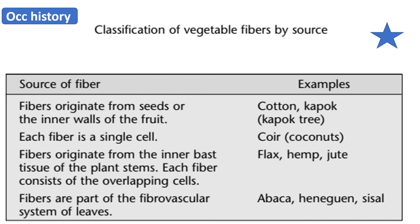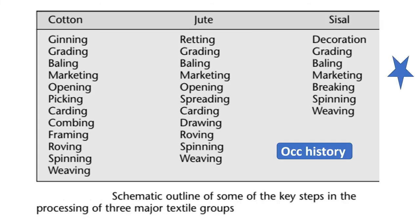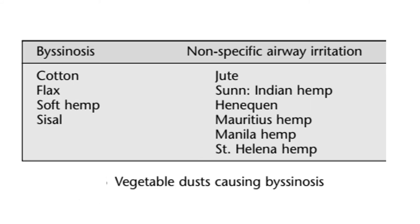Classification of vegetable fibers by source can be known for each worker by occupational history. Examples include exposure to cotton, coconuts, flax, hemp, jute, and sisal. There are three major textile groups — cotton, jute, and sisal — each with its own industrial processes that expose workers to byssinosis, as identified by occupational history.